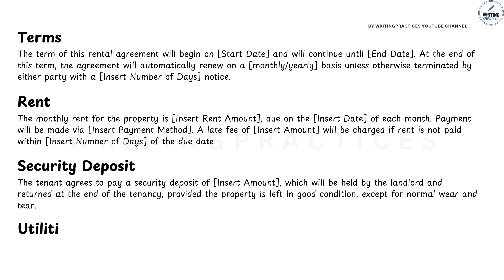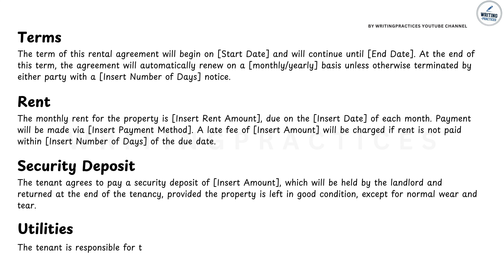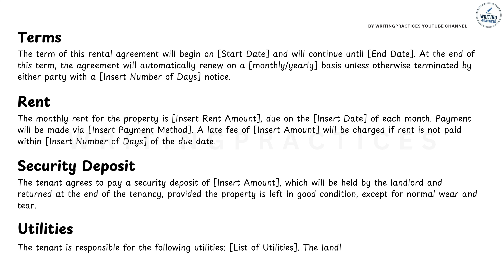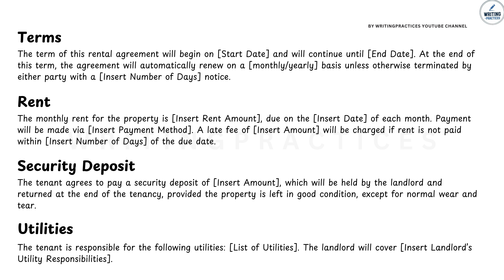Step 6: Clarifying utilities. Another key part of the agreement is the section on utilities. You'll need to specify who is responsible for paying which utilities — for example, will the tenant be responsible for electricity, water, gas, or other utilities? You'll also want to mention if there are any utilities that the landlord will cover, such as trash collection or internet. This keeps things clear from the beginning and prevents any confusion over bills later on.